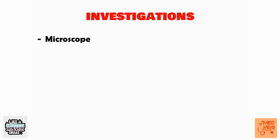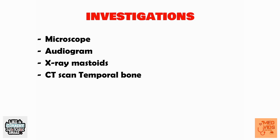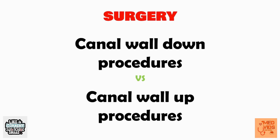Investigations include clinical examination and history taking, followed by microscopy to examine the external auditory canal, tympanic membrane, and cholesteatoma. An audiogram should be performed to identify the type of hearing loss, and X-rays of the mastoids are taken to check mastoid involvement. A CT scan of the temporal bone is superior to X-ray for evaluating the extent of bone destruction.